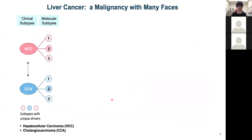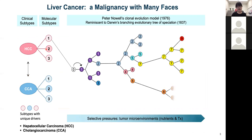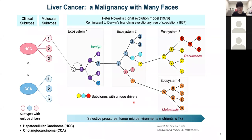Liver cancer is a very complex disease. It mainly comprises two clinical subtypes: hepatocellular carcinoma, HCC, and cholangiocarcinoma, CCA. Each clinical subtype further consists of different molecular subtypes determined by molecular features. Liver cancer is a dynamic disease with constantly evolving tumor cells. Selective pressures from tumor microenvironments, such as nutrients and space, allow some subclones to expand while others become extinct. This evolutionary process is driven by selecting variable phenotypes for survival fitness in a tumor ecosystem, causing a great challenge for liver cancer treatment.